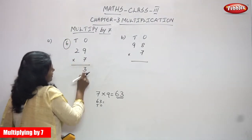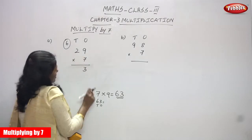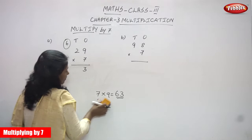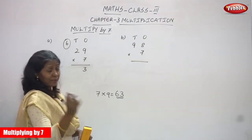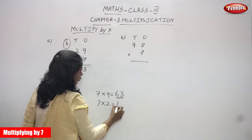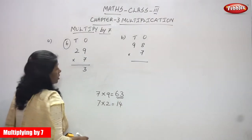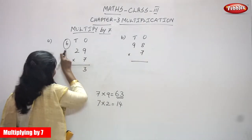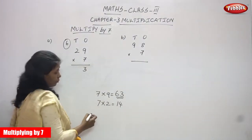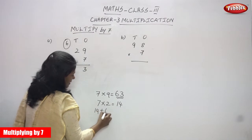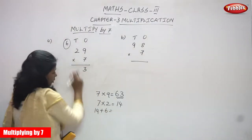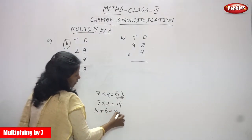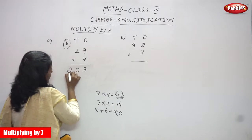Now I am going to multiply 7 by the tens digit, which is 2 tens. You must say the 7th table up to 2: 7 ones are 7, 7 twos are 14. The answer is 14. So 14 tens plus 6 tens — the 6 is a carryover — gives you 20.